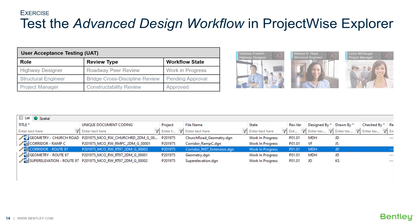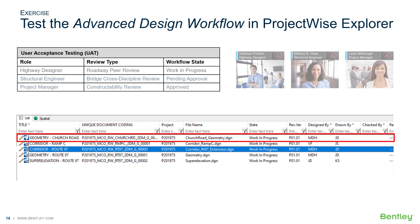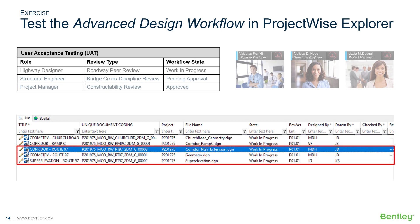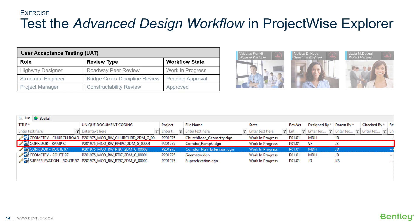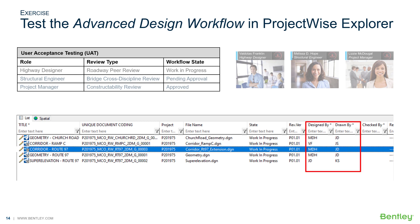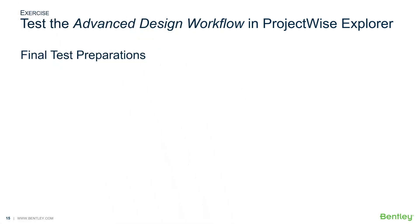30% models are now ready for peer review, including Church Road Geometry, Route 97 Geometry, Super Elevation and Corridor, and the Ramp C Corridor. See the Design By and Drawn By columns to verify the information. We're almost ready to have our project team members test the rules engine configuration by working the documents in the test folder through the advanced design workflow.